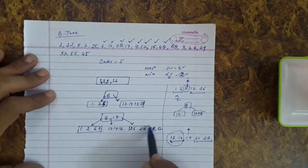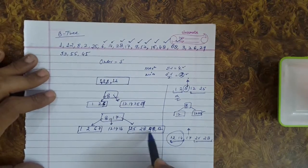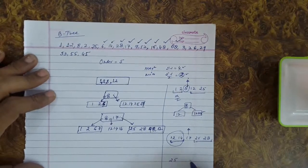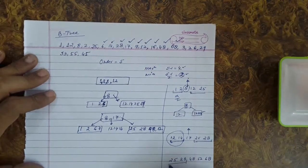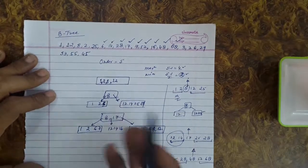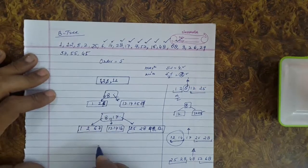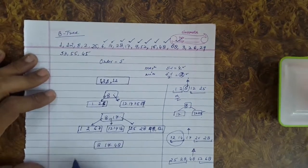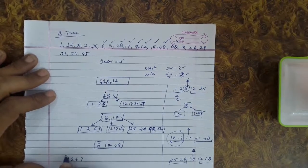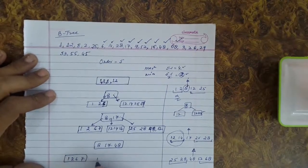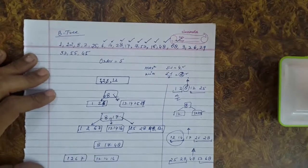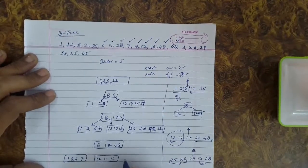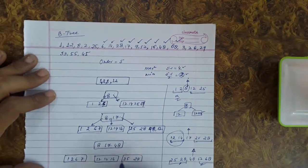When we try to insert 68, the rightmost node is violating the maximum condition. We virtually insert 68, giving 25, 28, 48, 52, and 68. M/2 keys remain on the left, the median key 48 is sent upwards, and the rest remain on the right. The key 48 is accommodated in the root, which now contains 8, 17, and 48.